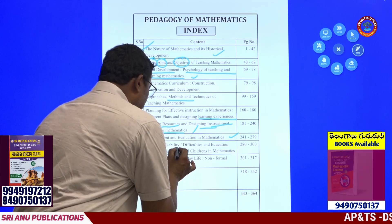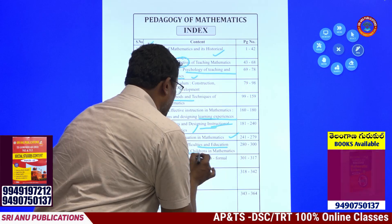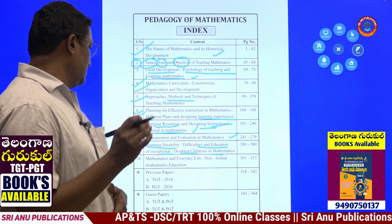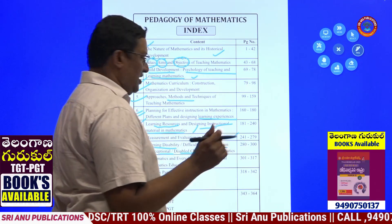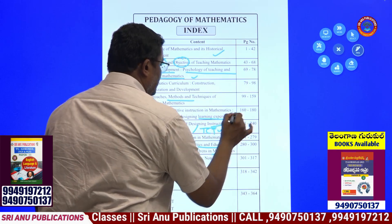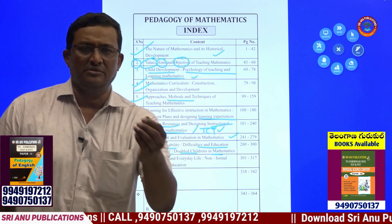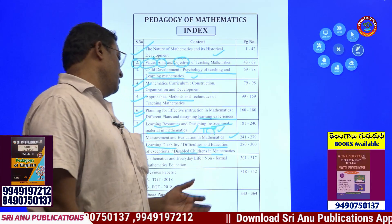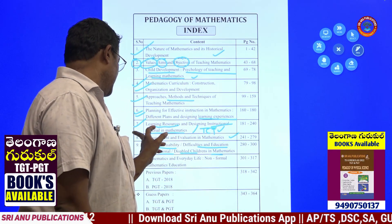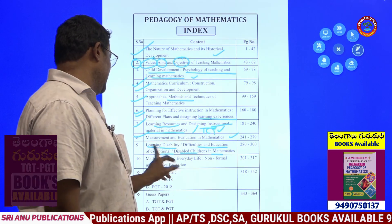Learning disabilities, difficulties in education for exceptional children, and disabled children in mathematics are also covered. In the 8th chapter, we will cover ICT — Information, Communication, and Technology. We will also cover Evaluation and CCE.